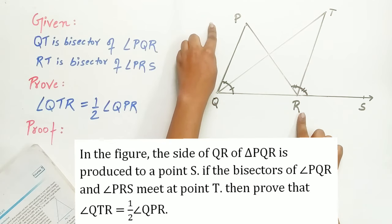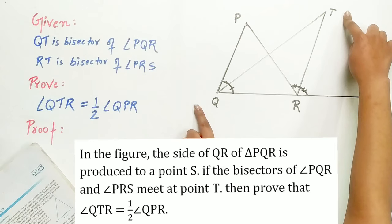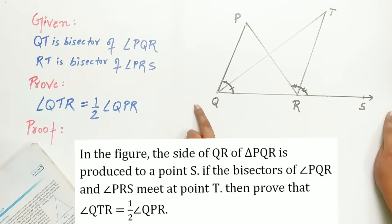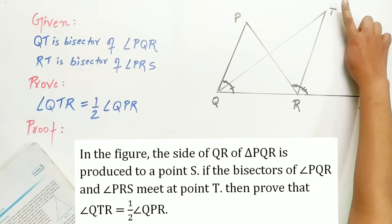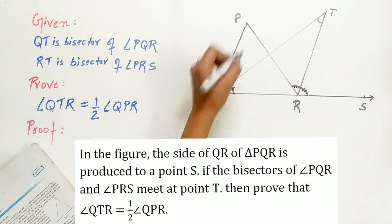angle PQR is produced to point S. If the bisectors of angle PQR and angle PRS meet at point T, then prove that angle QTR is half of angle QPR.